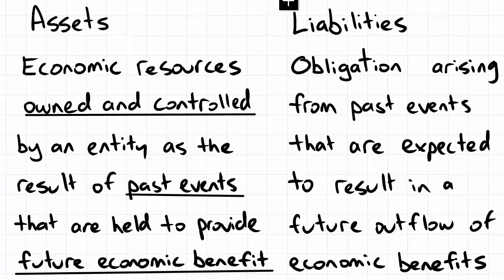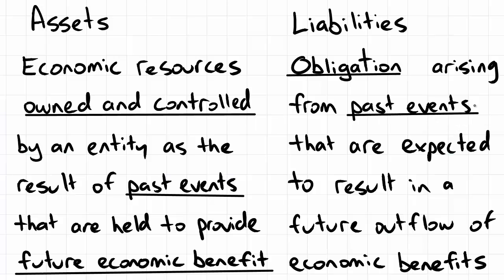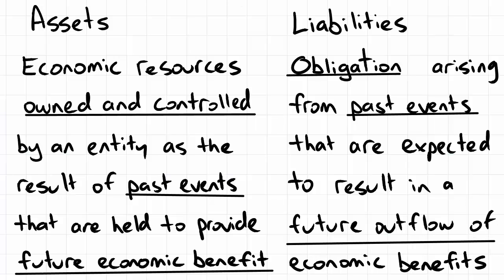Now we'll have a look at liabilities, and the definition of liabilities mirrors that of assets. We had three key characteristics for assets and it'll be the same with liabilities. Instead of ownership and control, you have an obligation with a liability. Similar to an asset, the obligation — like the ownership and control of an asset — had to arise from a past event, so at some point you took out the liability.